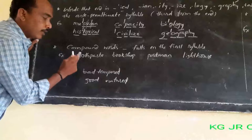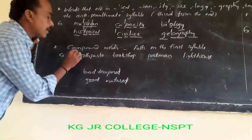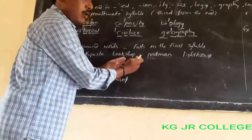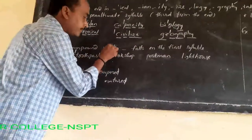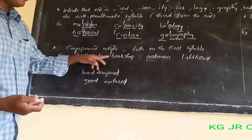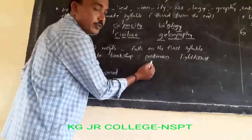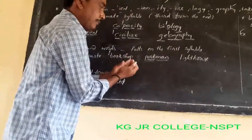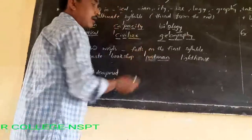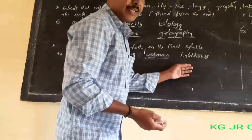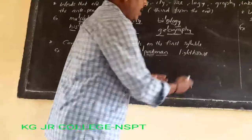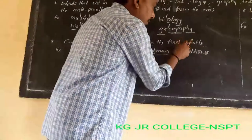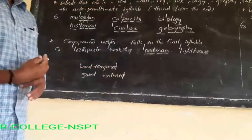In compound words with two nouns, the stress falls at the beginning. For example, 'bookshop': book is a noun, shop is a noun — stress is at the beginning: BOOK-shop. Similarly, 'postman': post and man — POST-man. 'Lighthouse': light and house — both nouns, LIGHT-house. In these closed compound words, we place the stress at the beginning.